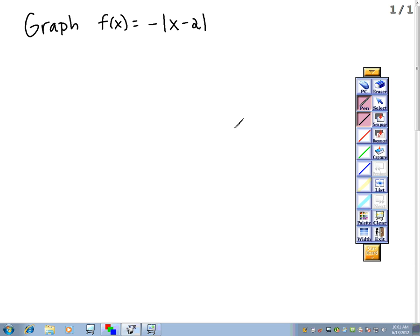Let's graph the function f(x) equals the negative of the absolute value of x minus 2. I'm just going to plot this by shifting.